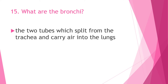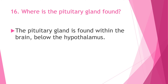Question 15: What are the bronchi? Bronchi are the two tubes which split from the trachea and carry air into the lungs. Question 16: Where is the pituitary gland found? The pituitary gland is found within the brain, below the hypothalamus.